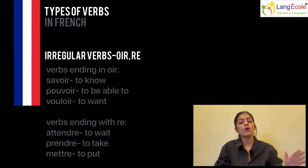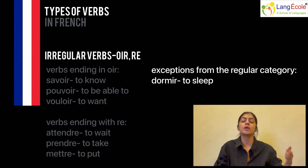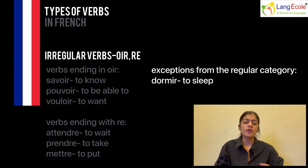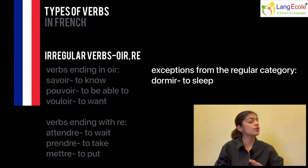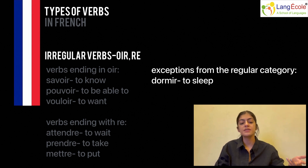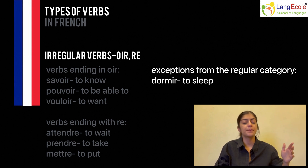Irregular verbs also include the exceptions that we talked about from the previous category, such as dormir, which ends with -ir. All of these verbs are conjugated in different ways and thus do not fall under the category of regular verbs. The conjugations and tenses of each of these irregular verbs must be learnt, and there are no specific rules, per se.